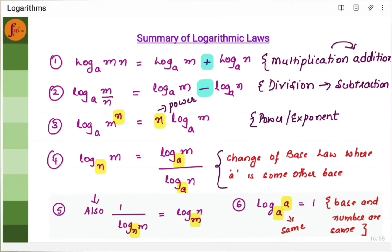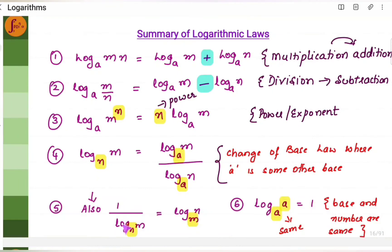The fourth law is the change of base law. If you have log m to the base n, then we can write it as log m to the base a divided by log n to the base a. Also, if we have 1 by log m, we can write it as log n to the base m — we can swap the base and the number and take a reciprocal. The last property: if the base and the number are the same, then the result is 1. That is, log a to the base a is 1.